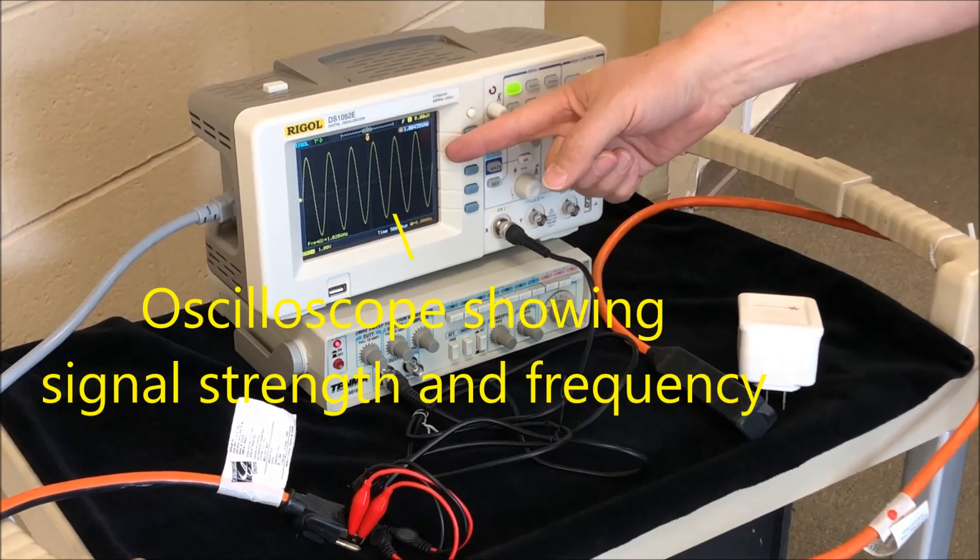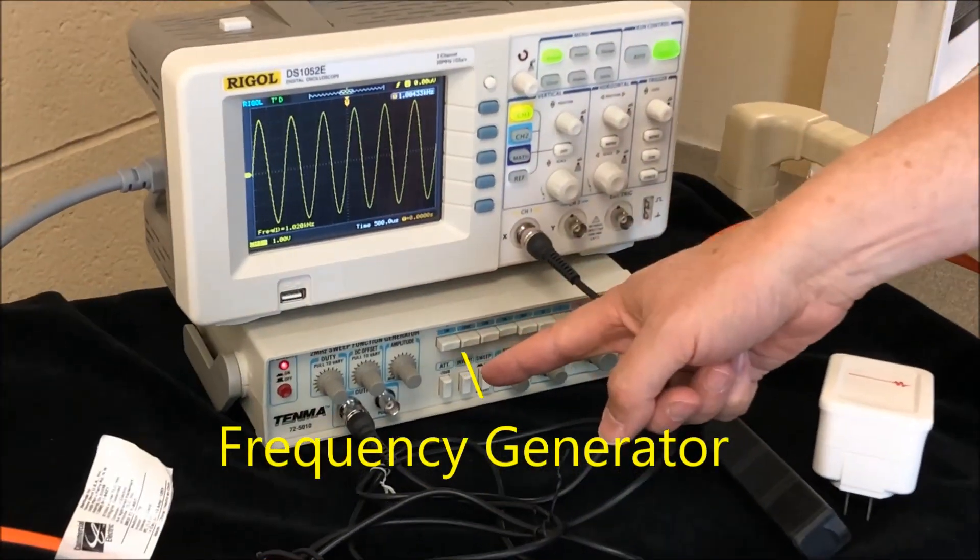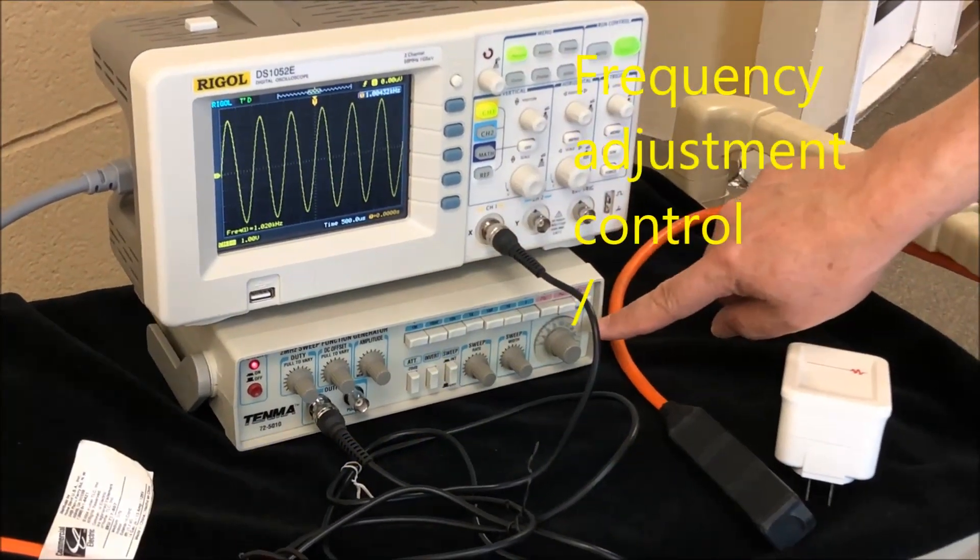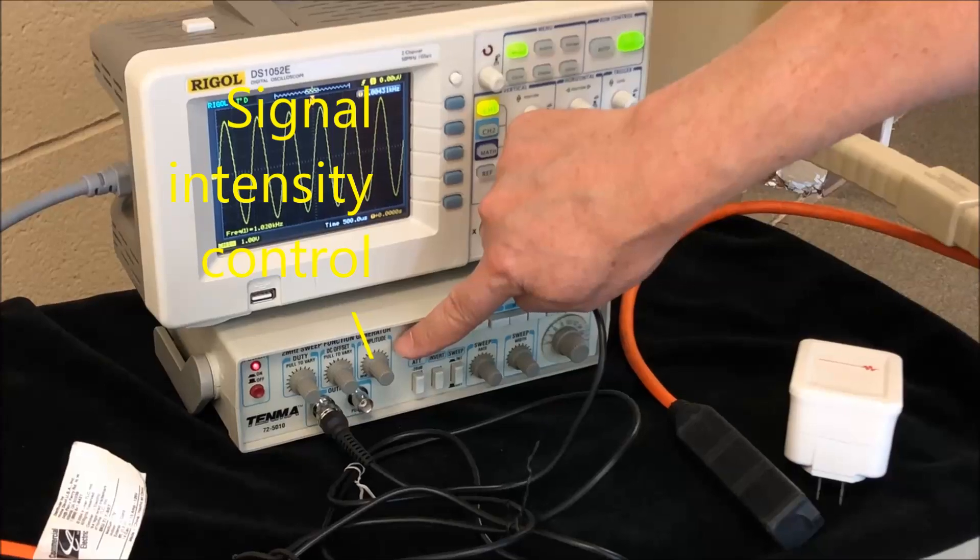Okay, so here we have an oscilloscope to measure the waveform and a frequency generator. We adjust the frequency and adjust the signal intensity.